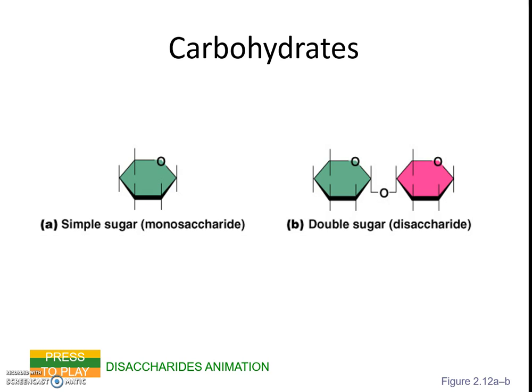And then there's going to be oxygens and hydrogens attached to the other places. Looking at a single ring structure, we know it is a monosaccharide because it's one sugar.